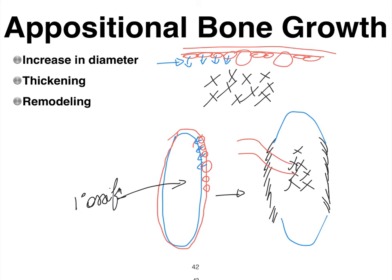Bear in mind that if we add bone tissue onto the outside of the structure, we must also deal with the medullary cavity and make it wider to maintain the lightness of the bone.